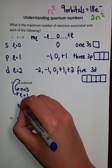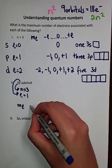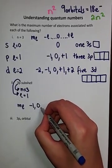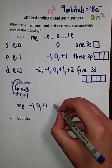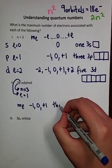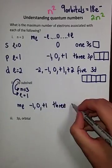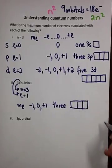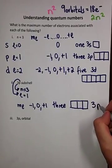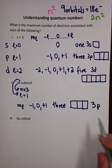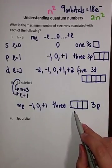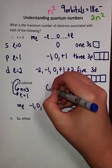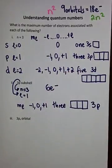Our possible ml values therefore are minus 1, 0, and plus 1. That corresponds to 3 orbitals. Now we've got our 3p orbitals. How many electrons can be accommodated? A total of 6 electrons can be accommodated.